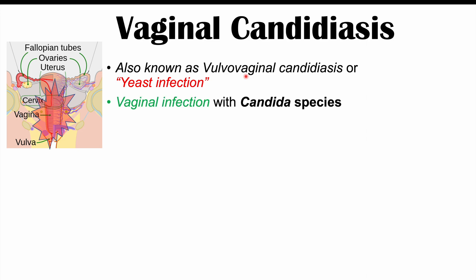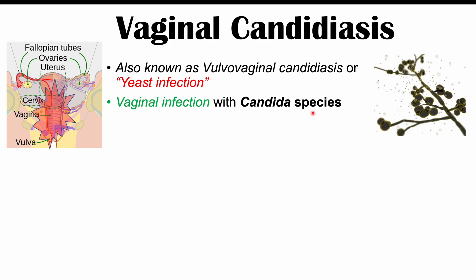Vulvovaginal candidiasis is a vaginal infection with candida species. Candida are fungi — fungal species that invade superficially into the vaginal epithelium. One particular species, candida albicans, is going to cause the majority of cases, accounting for 90% of cases, though there are other candida species that can cause infection as well. It's also important to note that candida albicans can be a normal part of skin flora on certain people — some people can have candida albicans along with many other microbial species without any issues or infections. But if there is some disruption, candida albicans can increase in number and cause infection.